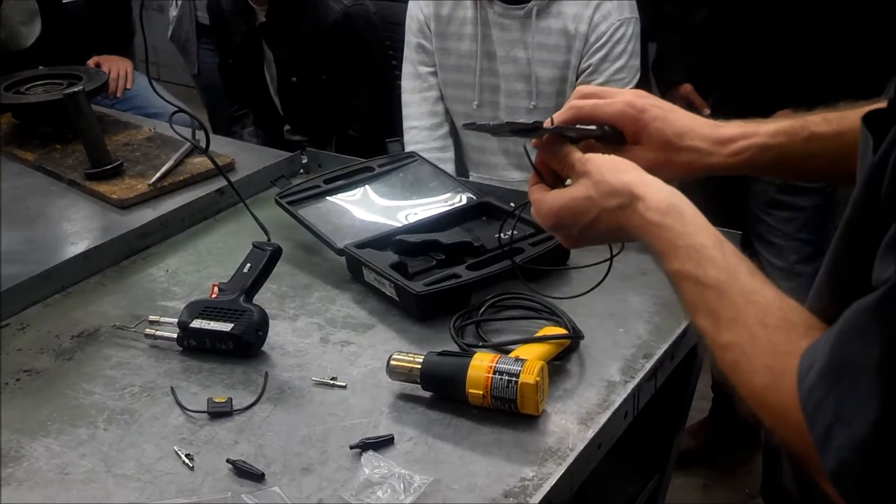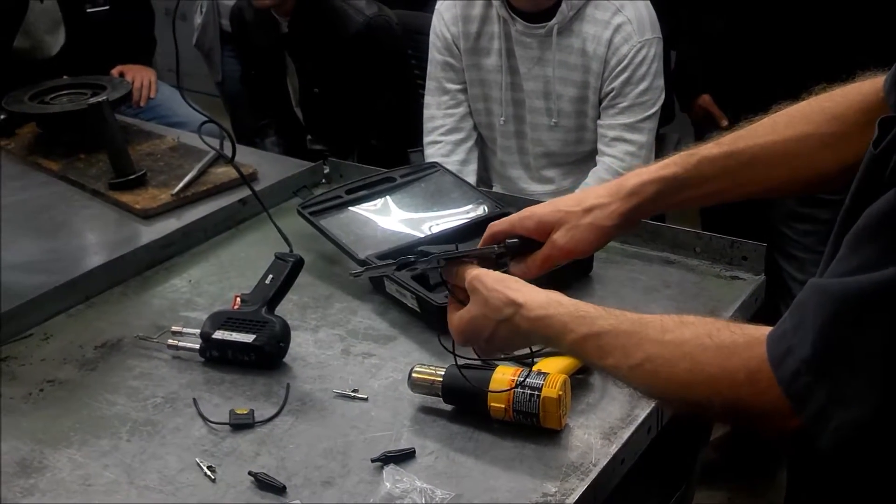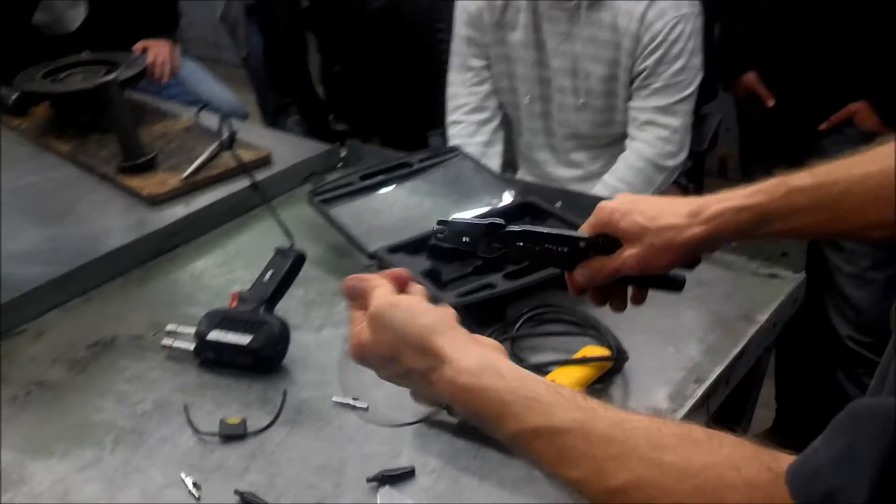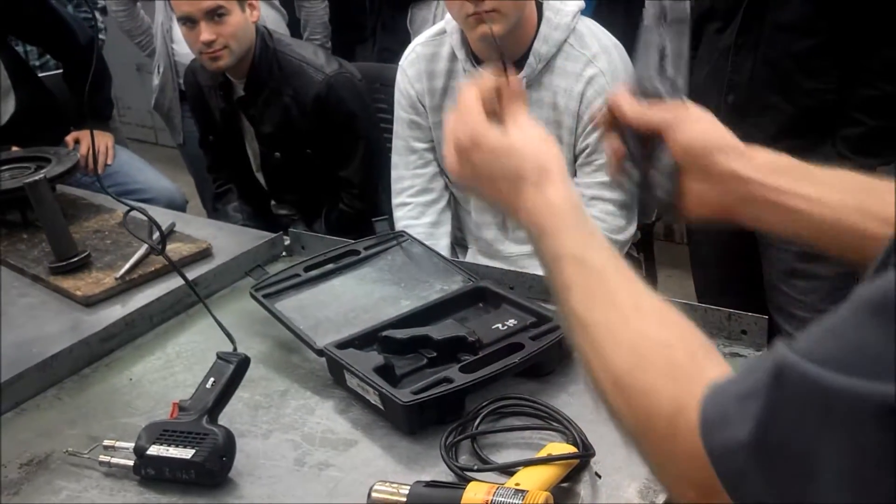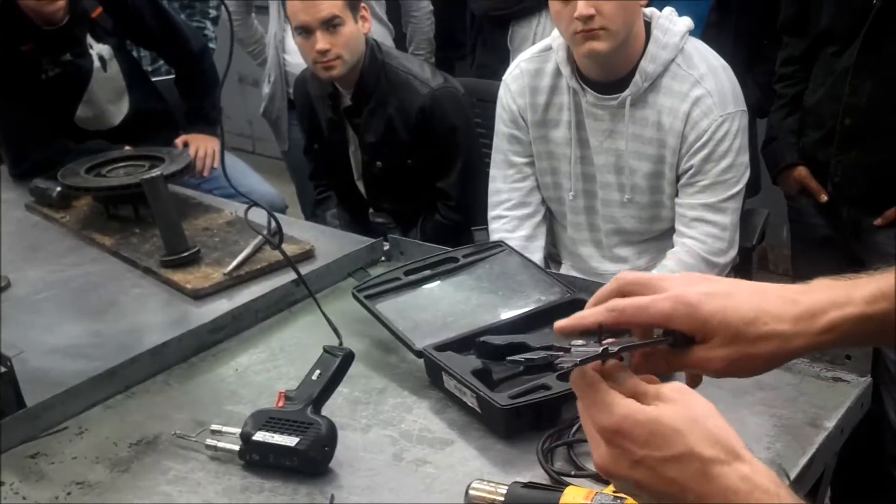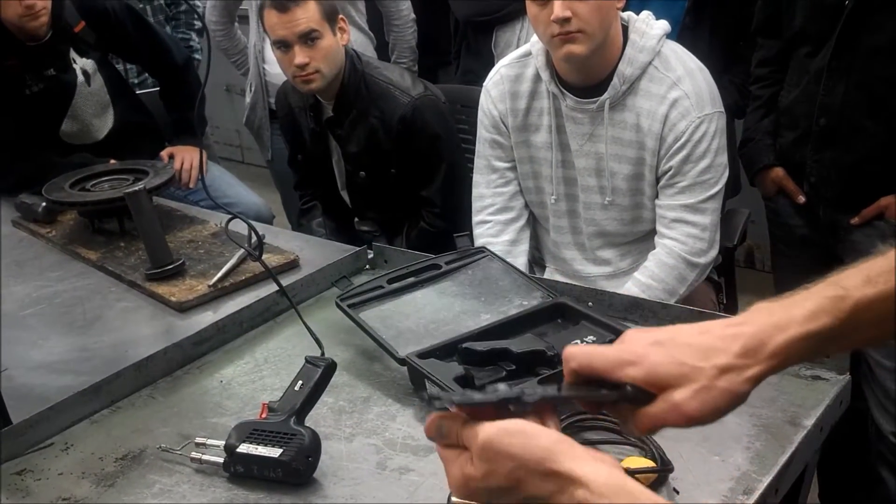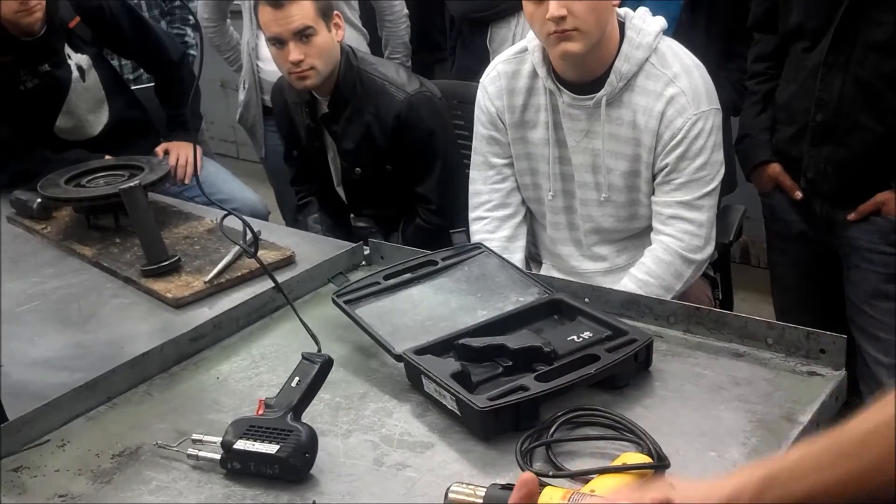So what we'll do is we'll strip the insulation using the wire strippers. We'll strip about a half of an inch off of the insulation off of the end of the wire, exposing the copper. What gauge is the wire? It's a 16 gauge wire.